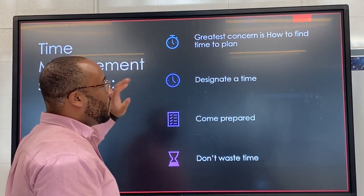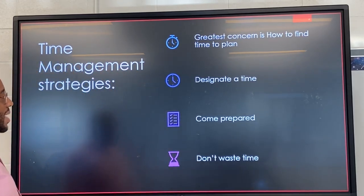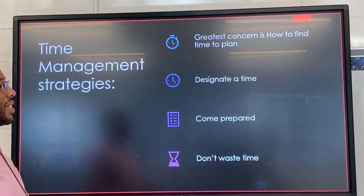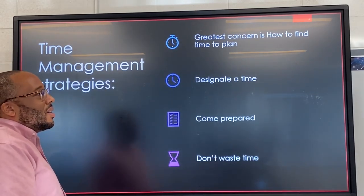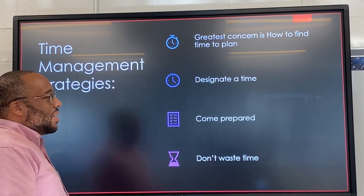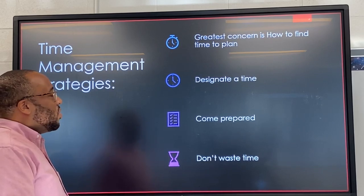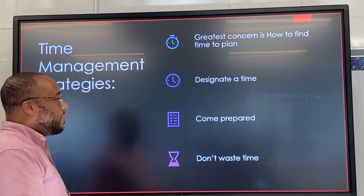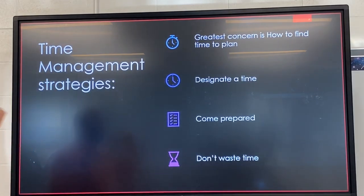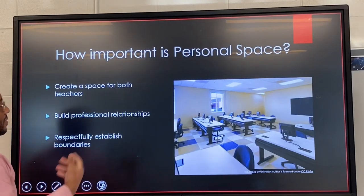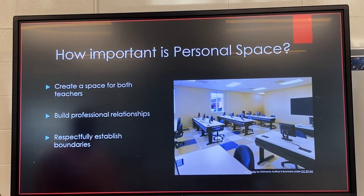The first thing you can do to improve co-planning is to designate a time. Know your expectations and come prepared — find activities and resources you already want to use and bring them to the meeting. Make a start time and an end time and stick to it. These are helpful tips if co-planning is one of your weaknesses.